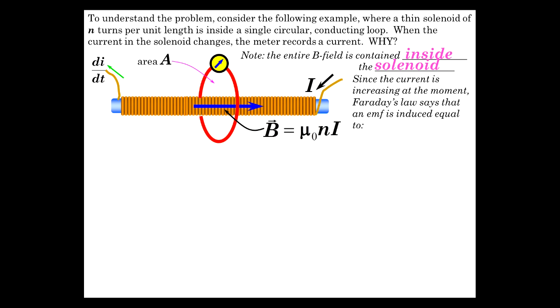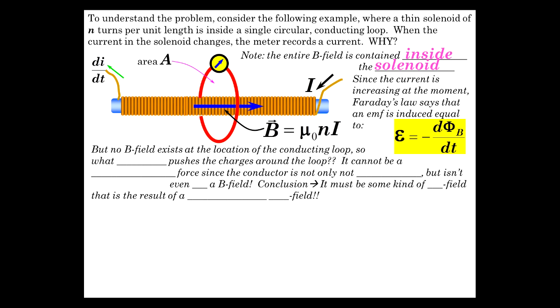Now, since the current is increasing, Faraday's law says we have an EMF equal to minus dΦ_B/dt. So there is a change in flux because the B field is changing because the current is changing. All, again, contained inside the solenoid. But there's no B field at the location of the loop. Here's the loop. I've already said that. There's no magnetic field there.